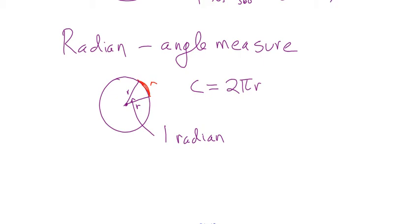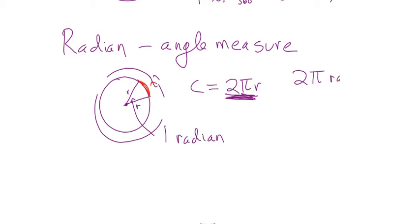How many of these r's are there around the outside of the circle? If I laid off this r, how many times would I have to do that? 2π of them — because we know the distance around is 2πr. So there are 2π radians in a circle.